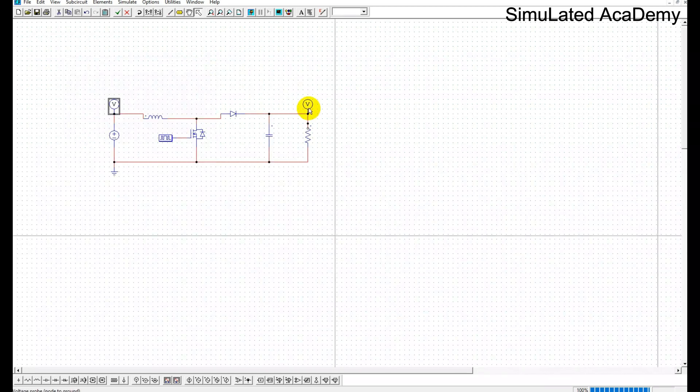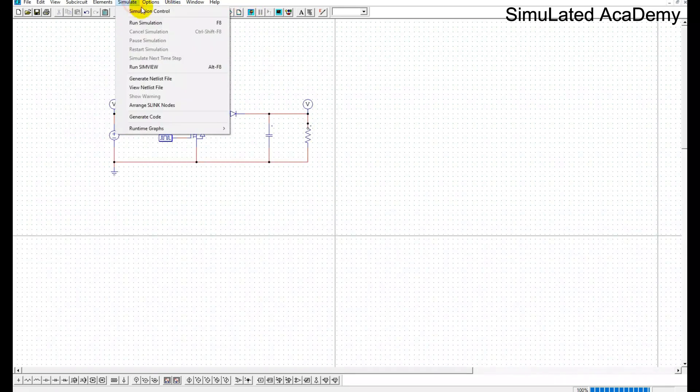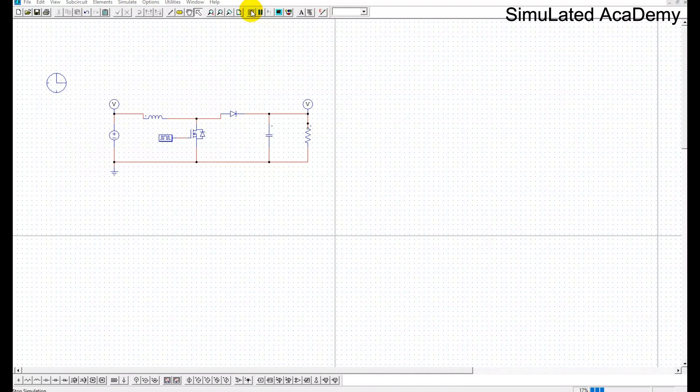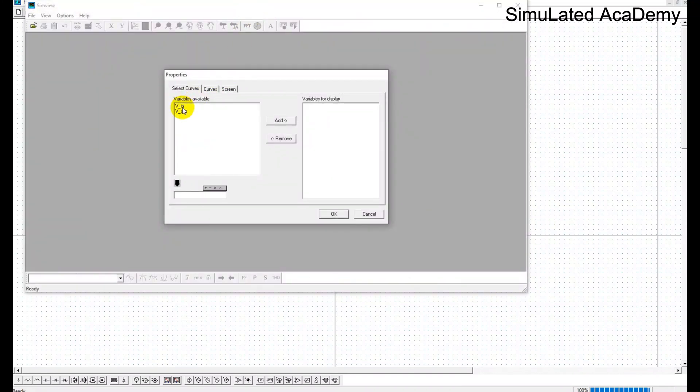Before running, place simulate control. Go to simulate and place it here. Keep it by default or make it 2x0.1 or 0.5, whatever value you want. Now simulate this.